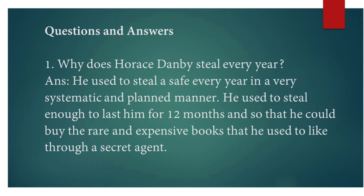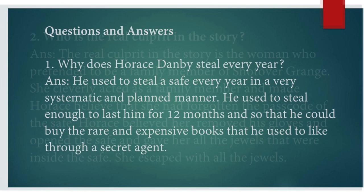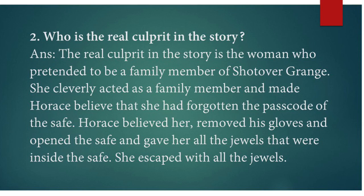Question number two: Who is the real culprit in the story? The real culprit is the woman who pretended to be a family member of Shortover Grange. She cleverly acted as a family member and made Horace believe that she had forgotten the passcode of the safe. Horace believed her, removed his gloves, opened the safe, and gave her all the jewels inside. She then escaped with all the jewels.